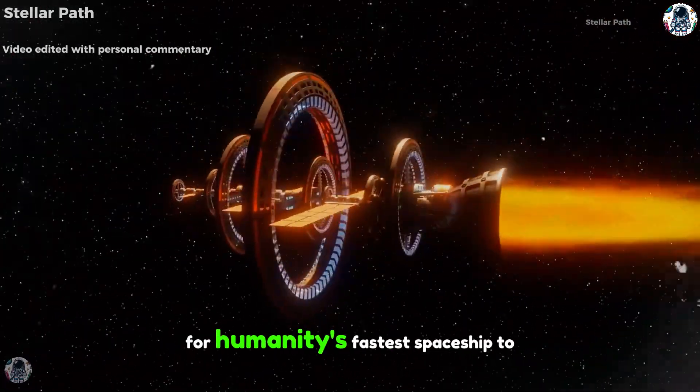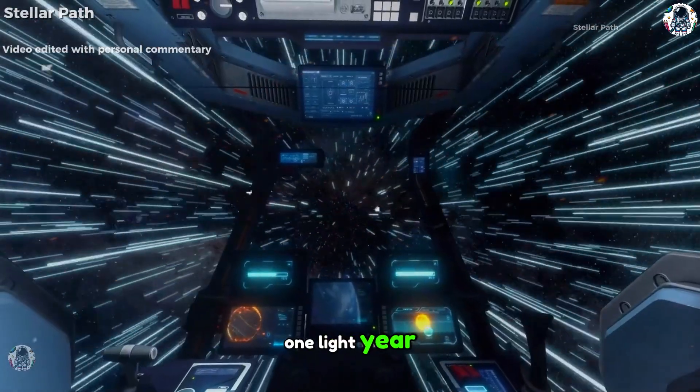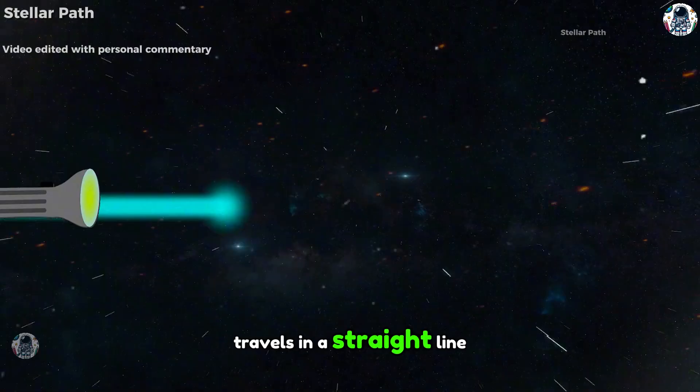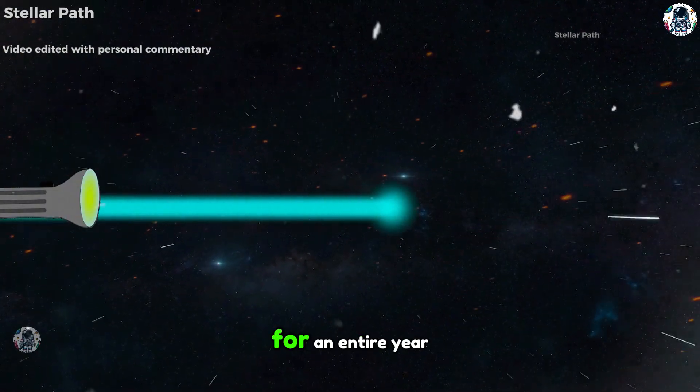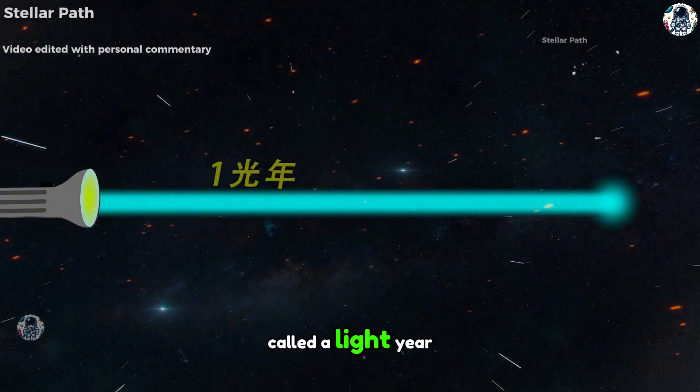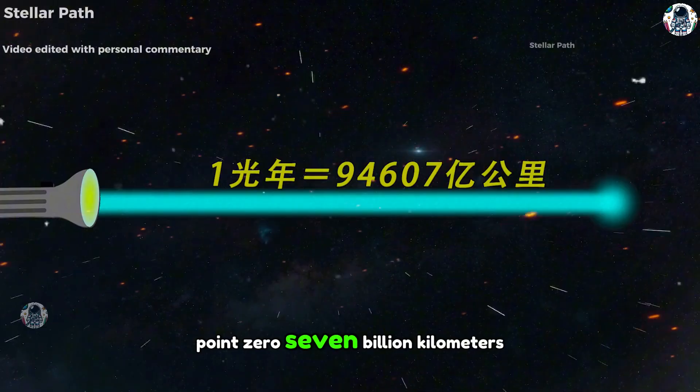How long does it take for humanity's fastest spaceship to travel one light year? We know that when a beam of light travels in a straight line through space for an entire year, the distance it covers is called a light year, which is about 940.07 billion kilometers.